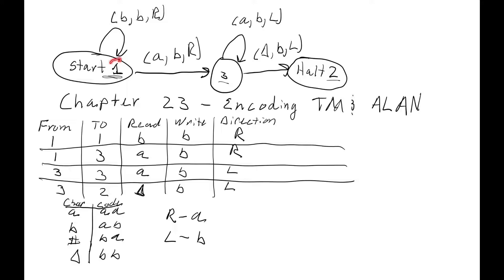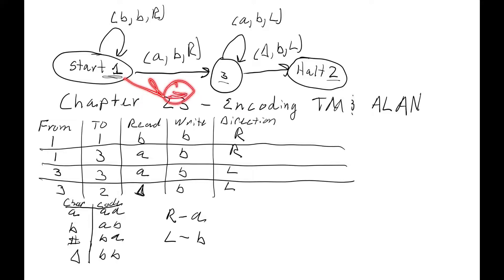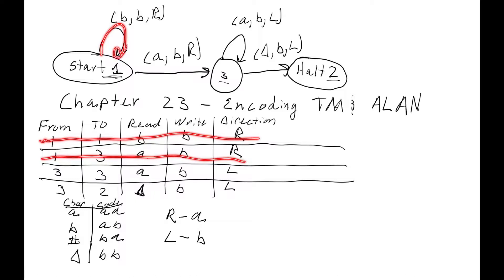A couple of rules: we're going to have the start state always be state one and the halt state always be state two. Then we'll just number all the rest of the states three, four, five, and so on. It's okay that we only have one halt state because after we halt, the machine quits. So if we have two halt states in the actual Turing machine, we could just have them go to state two. I've written out one row in this table for each edge that we have in this Turing machine.